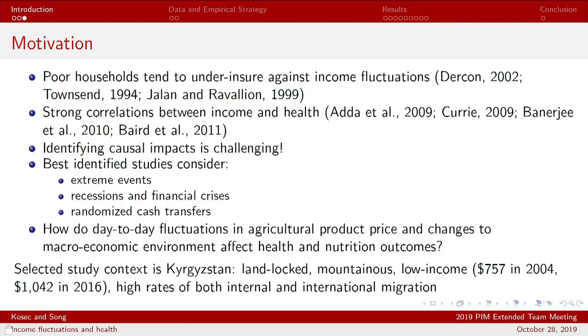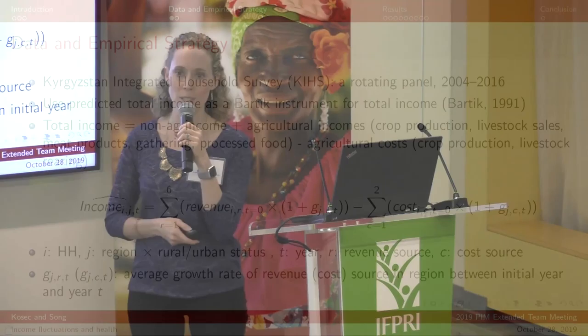We present what we do to try to identify causality in this paper, with a focus on day-to-day fluctuations and changes in sources of income. The context we're considering is Kyrgyzstan — a landlocked, mountainous, low-income-until-2014 country in Central Asia with high rates of internal and international migration. We have other work on the impacts of these income shocks on migration, but today I'll report on health.